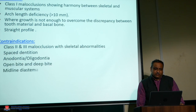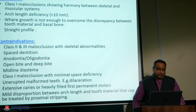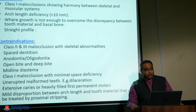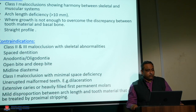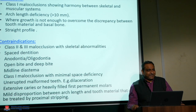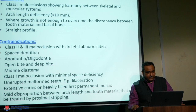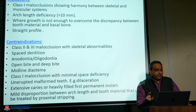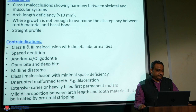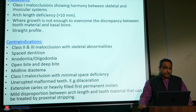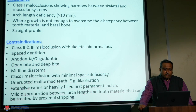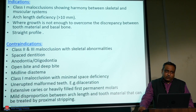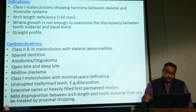The indications for serial extraction are: it can only be executed in Class I malocclusions showing harmony between skeletal and muscular systems. If there is skeletal malocclusion, serial extraction is contraindicated. There should be harmony between skeletal and muscular systems but disharmony between skeletal and dental structures. Arch length deficiency should be between 5 and 10 mm, and the patient's growth should not be sufficient to resolve the discrepancy between tooth material and basal bone.